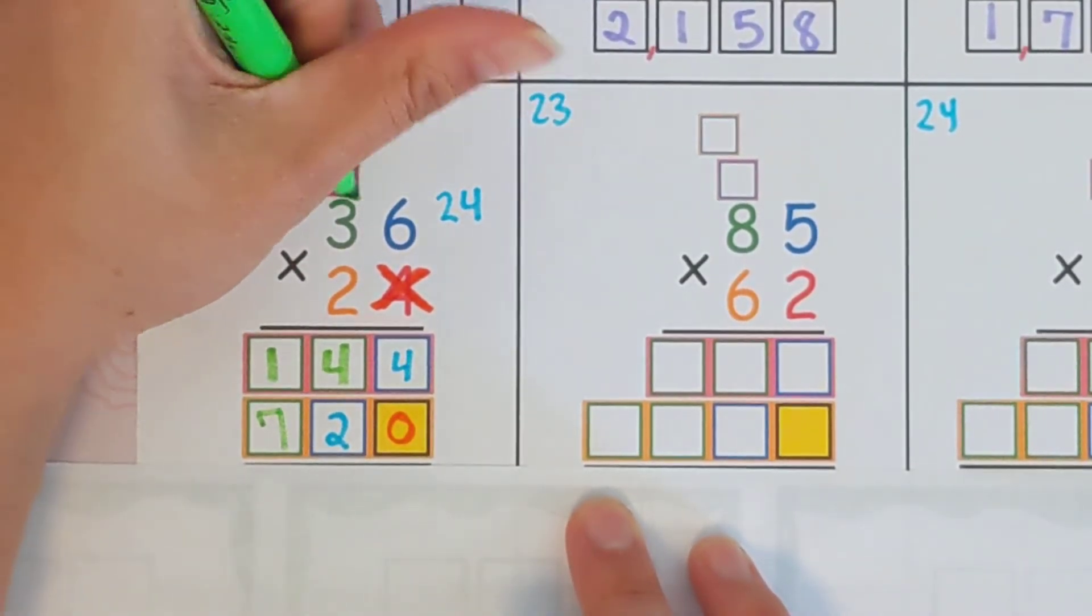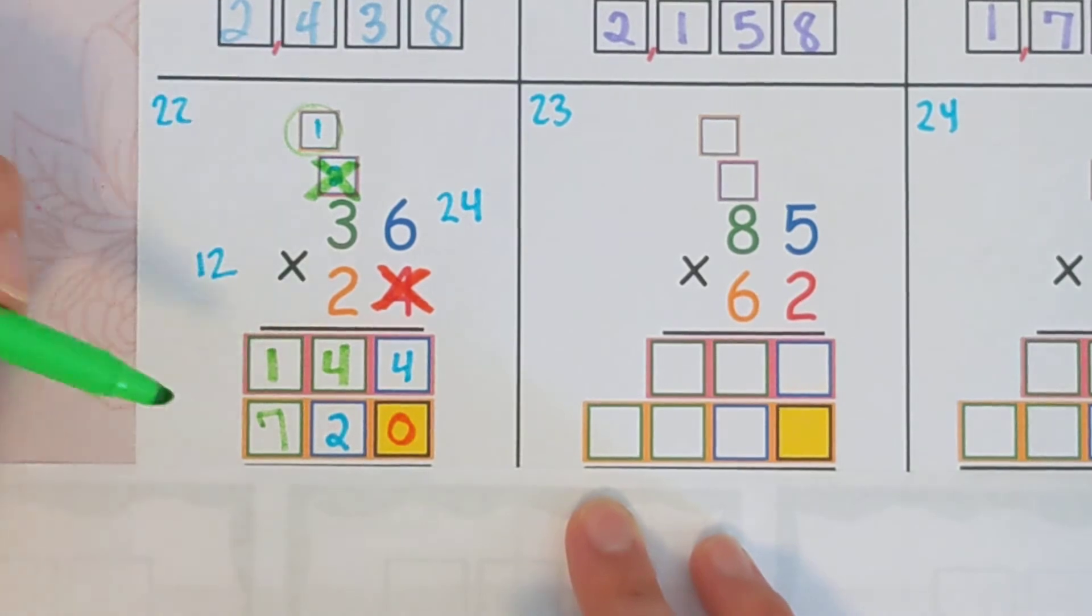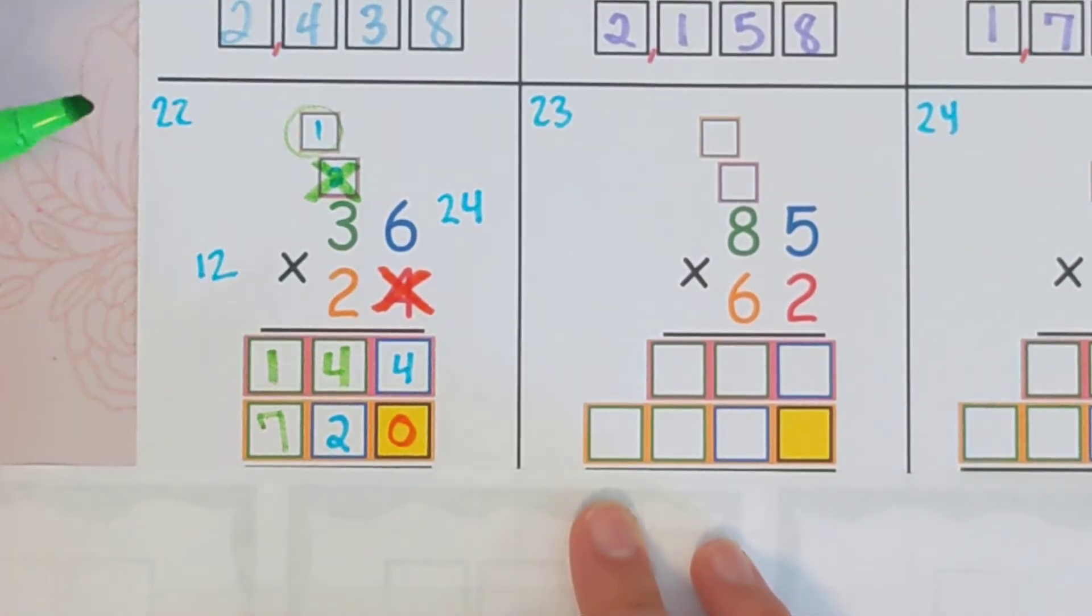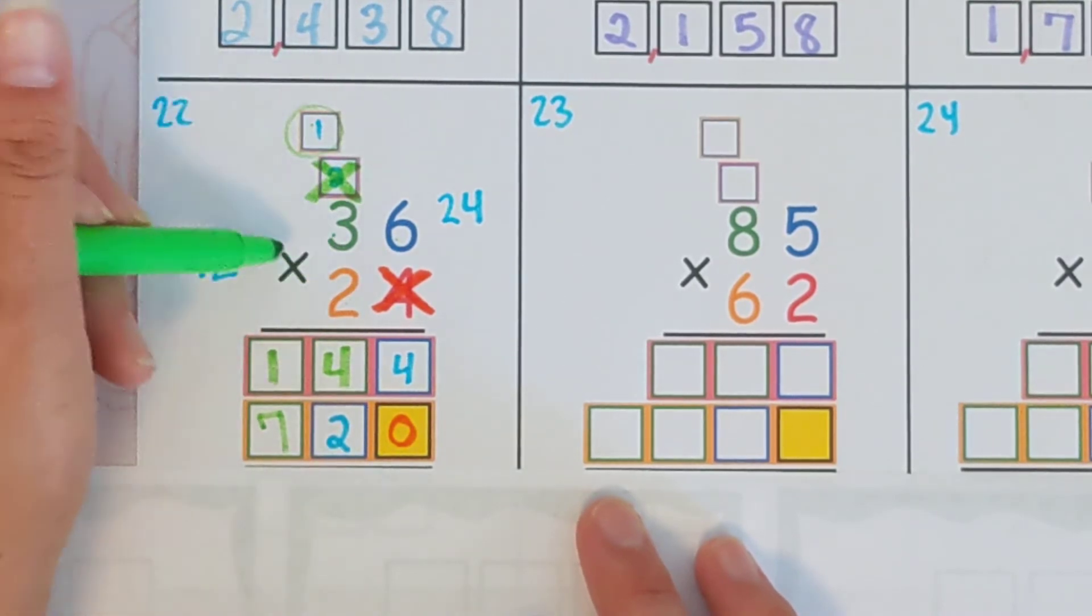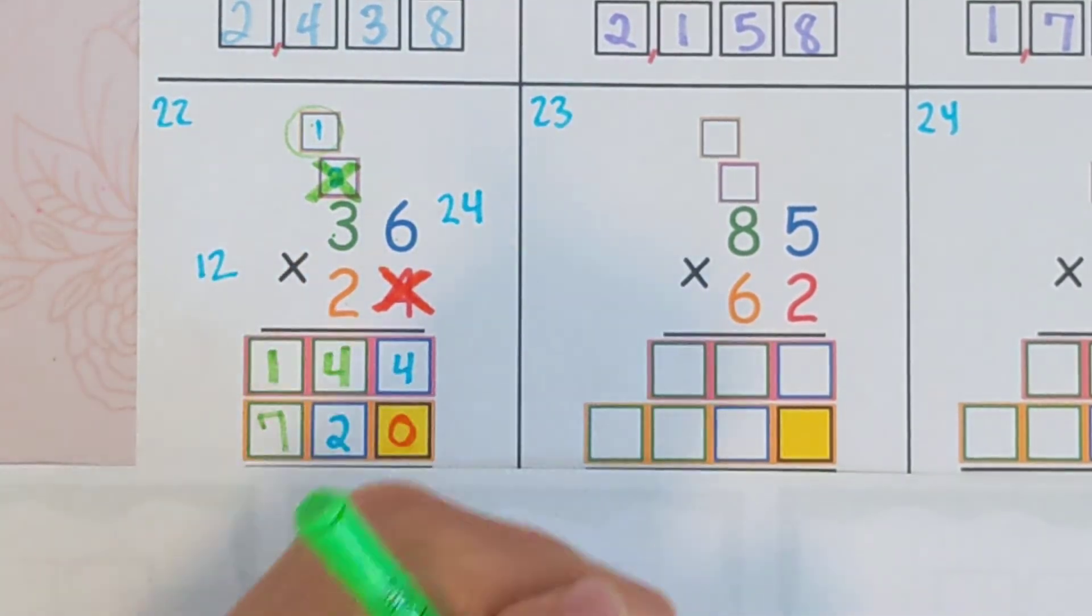And two times three is six plus one is seven. And this was from before. So if you want to cross that off, you can just so it doesn't confuse you. Okay. So just to recap what we did there with the two, we did two times six is 12. Two times three is six plus one is seven.